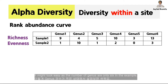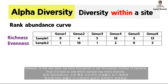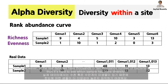It might look easy as the number of genera are only 6 in this example. However, in the real data, we have thousands or 10,000 number of bacteria. Thus, it's hard to see which sample has more diversity.